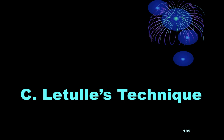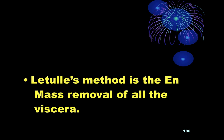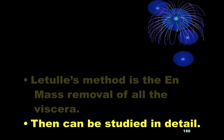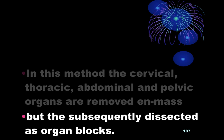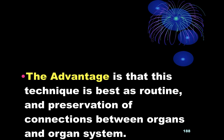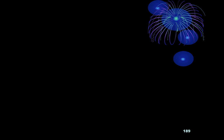The next technique is Letulle's technique. Letulle's method is an en-masse removal of all the viscera, which can then be studied in detail after removal. In this method, the cervical, thoracic, abdominal, and pelvic organs are removed en-masse, but subsequently they are dissected as an organ block. The advantage is that it is the best for routine use and preserves the connections between organs and organ systems, and the organ block can then be studied in detail.